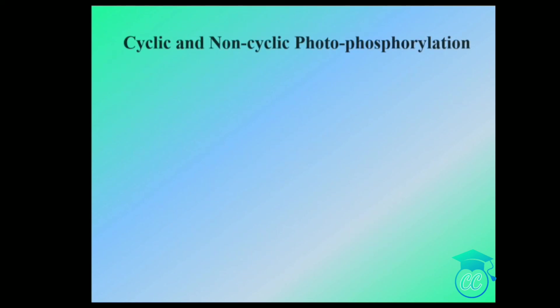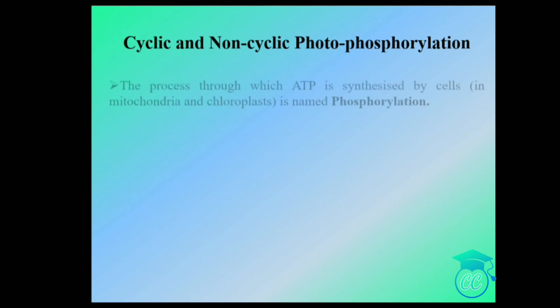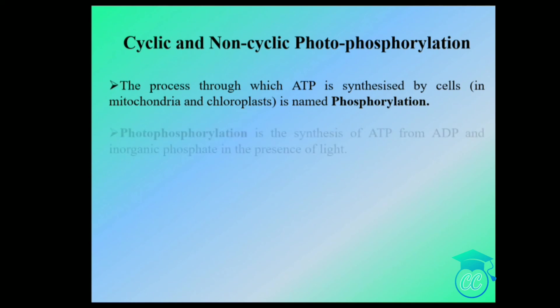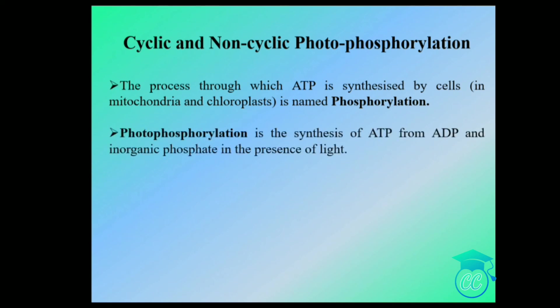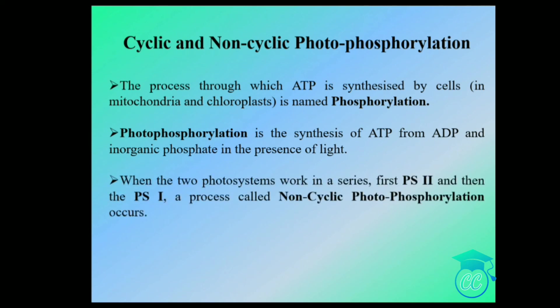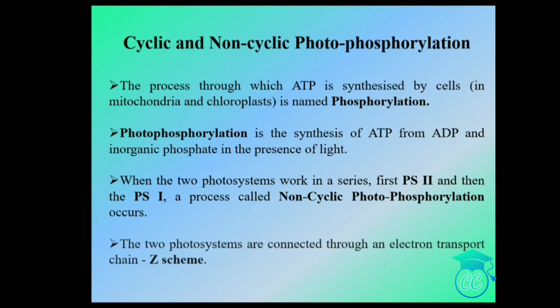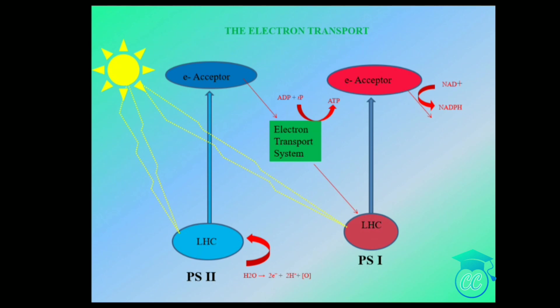Phosphorylation is the process through which ATP is synthesized by cells. Photophosphorylation is the synthesis of ATP from ADP and inorganic phosphate in the presence of light. When two photosystems work in series — first PS2 then PS1 — it is called non-cyclic photophosphorylation. The two photosystems are connected to an electron transport chain and the net products are ATP and NADPH.